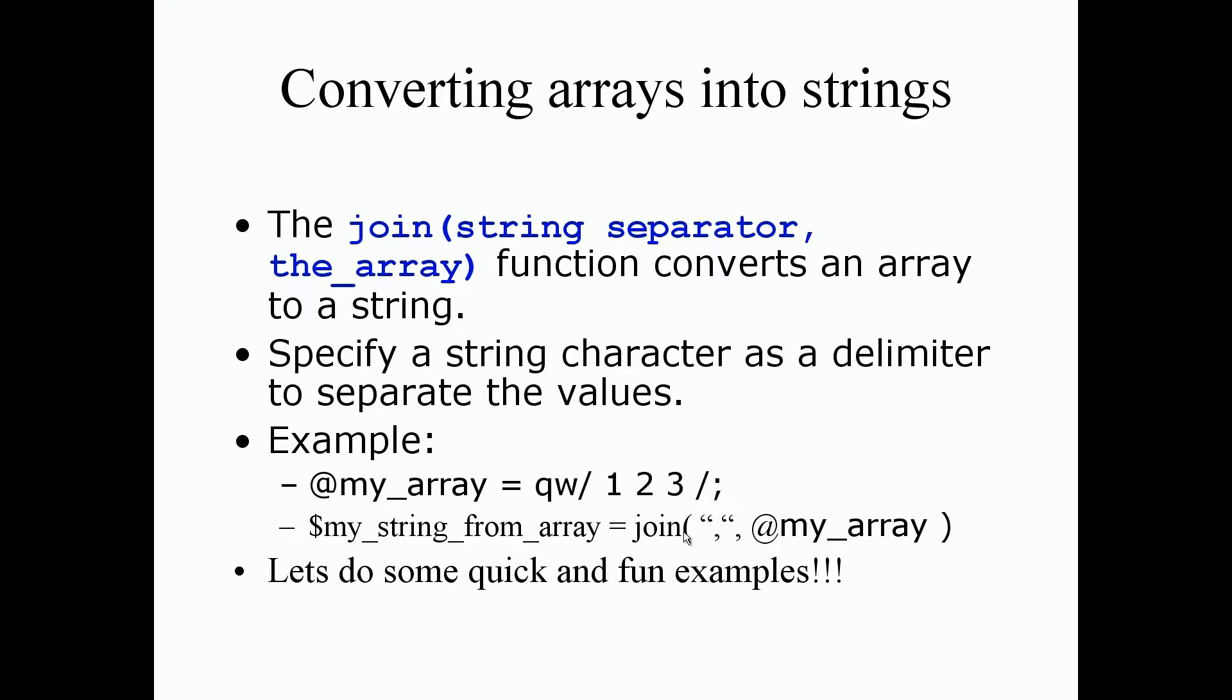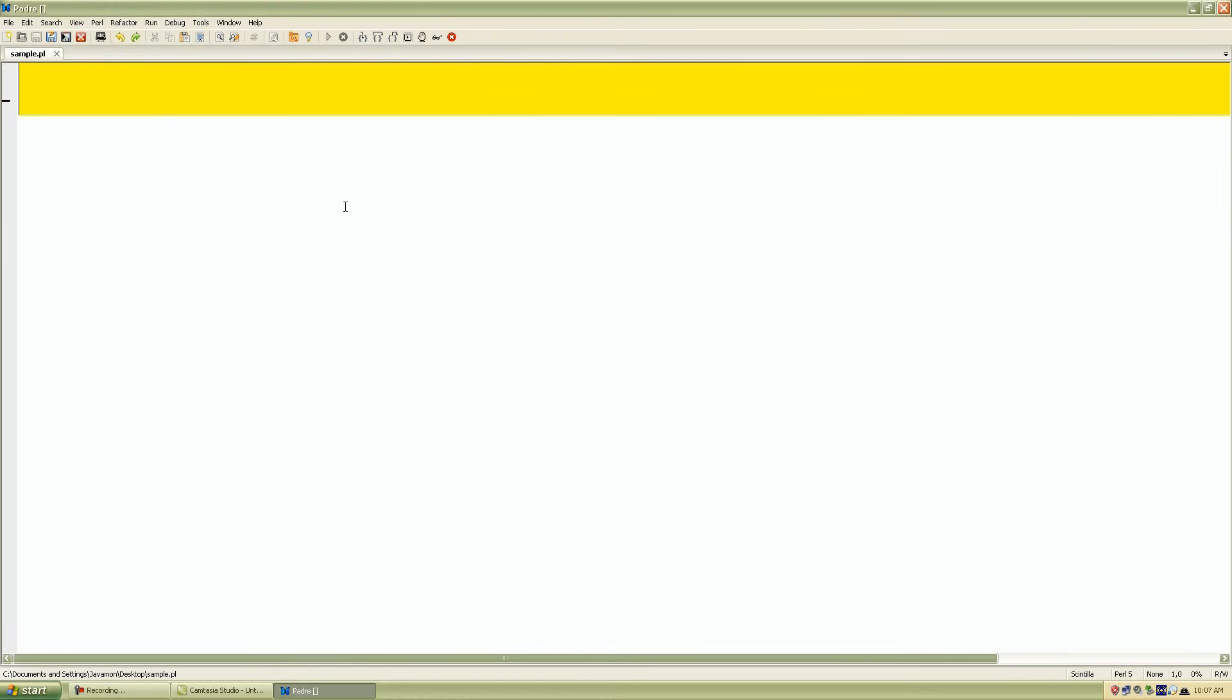Let's put this in action with some quick examples. We start by declaring our array. Let's set up my_array and assign some values to it. We'll use our favorite operator, qw. This time I'll put two forward slashes to start and end our values. I'll type the numbers one, two, three, all separated by spaces.